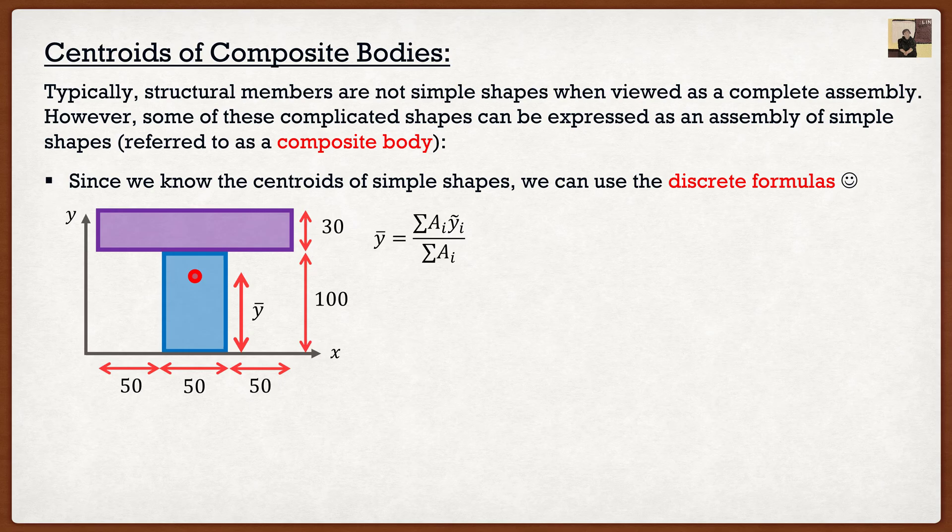So if we were to look here, we say, okay, I have two shapes. So my summation is going to involve two terms. So I got area of the purple shape times y squiggle the purple shape, plus the area of the blue shape times y squiggle the blue shape divided by that total area. And then it just becomes plug and chug.